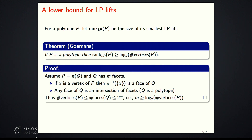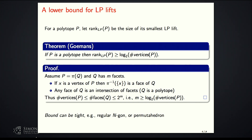The motivation for this work is to find a similar lower bound for PSD rank, because this bound turns out to be tight for the examples I mentioned. For the regular N-gon, the LP extension complexity is log N, and for the permutahedron this bound is also tight.